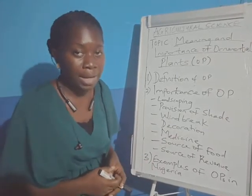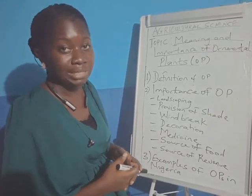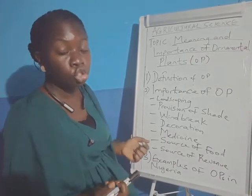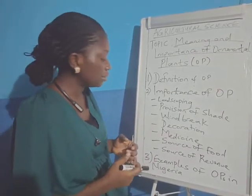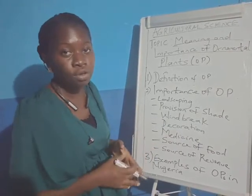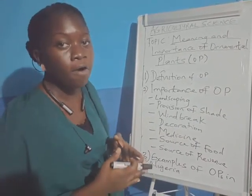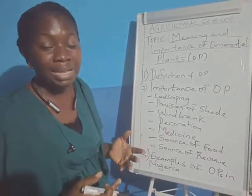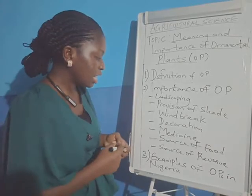Then ornamental plants serve as a source of food for man. We have some trees that produce fruit that can be consumed by man. Ornamental plants can also serve as a source of feed for farm animals, as we have some plants that can be consumed by farm animals.